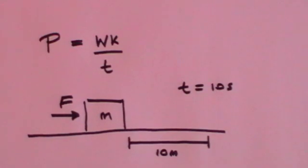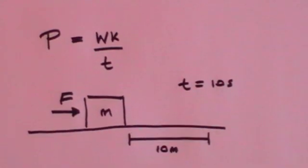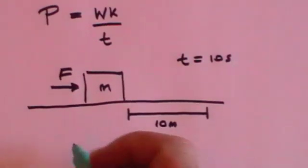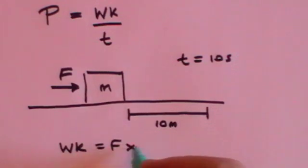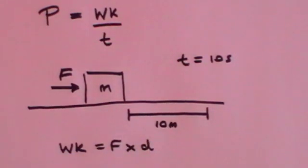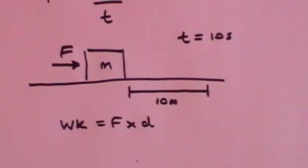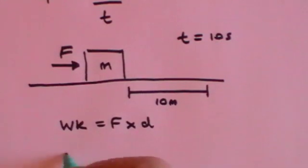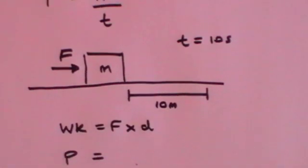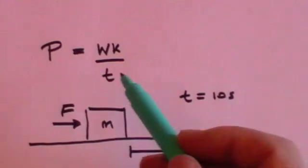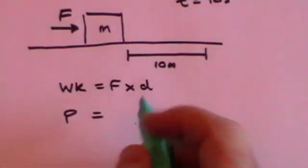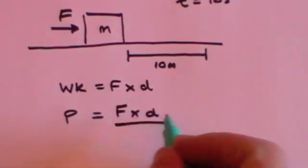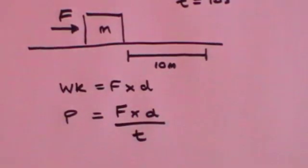What is the power that we have exerted? Well, the first thing we have to do is work out the work done. Work is force times distance, that's what we learned last time. And the power is then going to be equal to the work divided by the time, so power is force times distance divided by time.